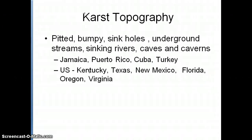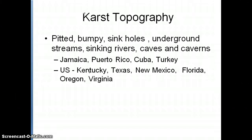Karst topography or karst landscapes happen in areas that have limestone parent rock. These are going to be seen as landscapes that are pitted, bumpy — they have sinkholes, underground streams, caves, caverns, and sinking hidden rivers. You're going to use a Google Maps activity this week to look at one karst landscape in Florida and in Kentucky.